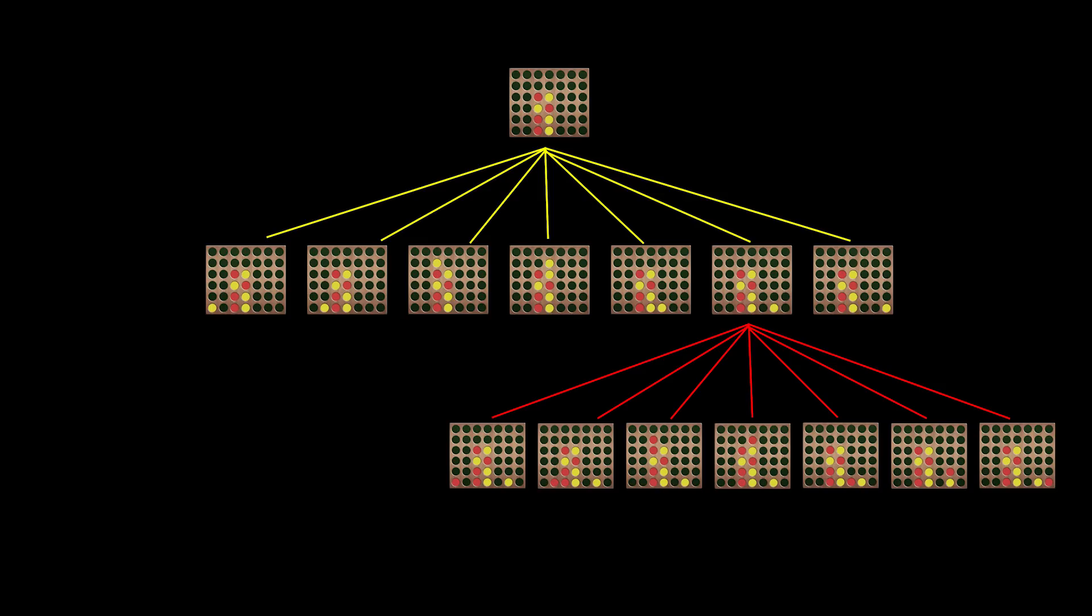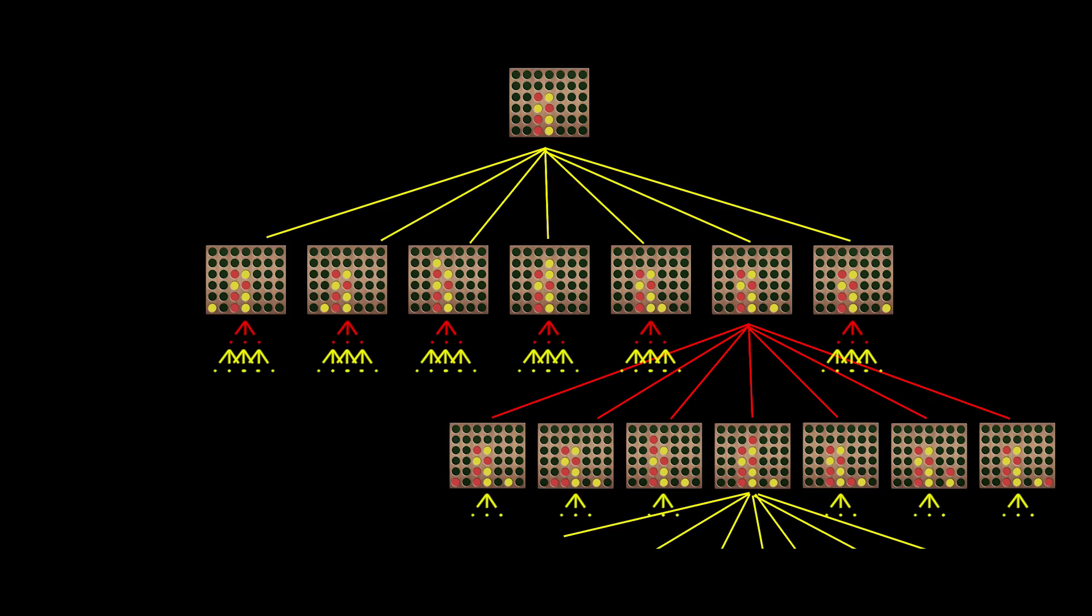So for each one of these moves that we can make, the seven moves, we expand the opponent's seven moves. And then let's just keep going. So for each of the opponent's seven moves, we expand seven more moves that we can make.